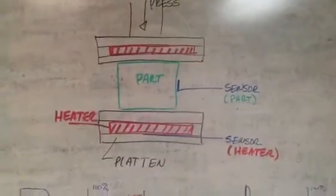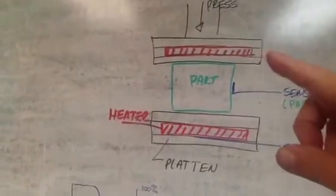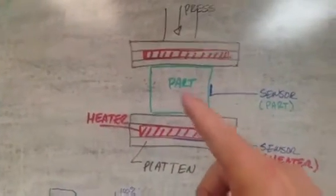Okay, so in this case we have a press and it has two platens, one above and one below. Inside of that are heaters inside these platens, and here's the part to be heated.